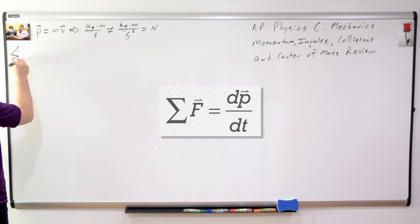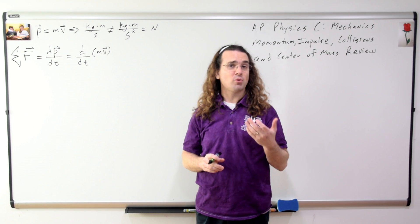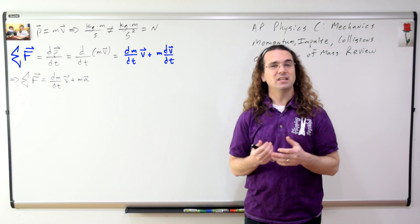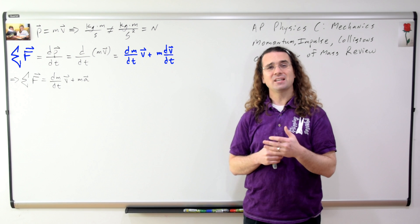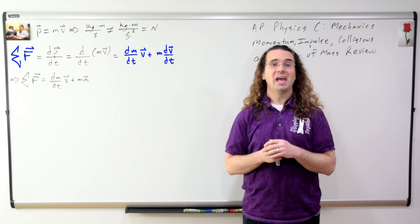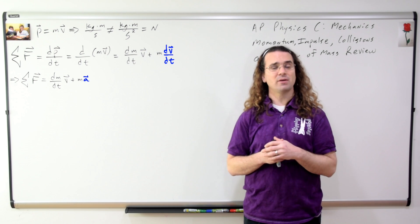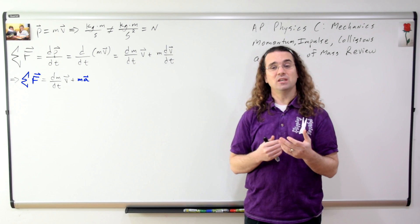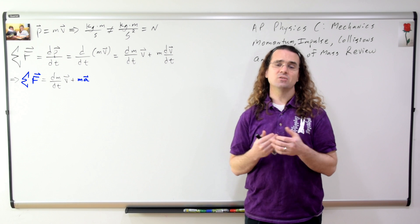Because momentum equals mass times velocity, we can use the product rule to get: net force equals the derivative of mass with respect to time times velocity, plus mass times the derivative of velocity with respect to time. And we know the derivative of velocity with respect to time equals acceleration. Therefore, when we used net force equals mass times acceleration as Newton's second law, what were we assuming?